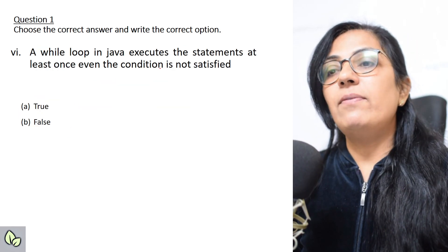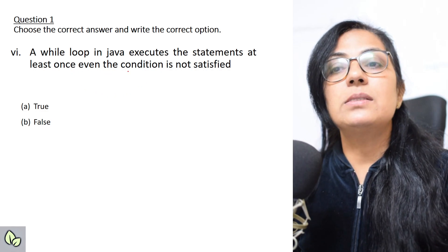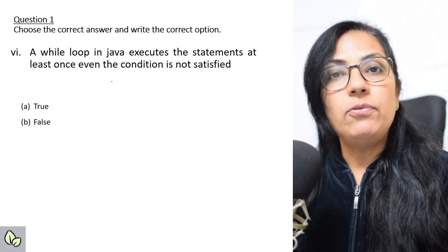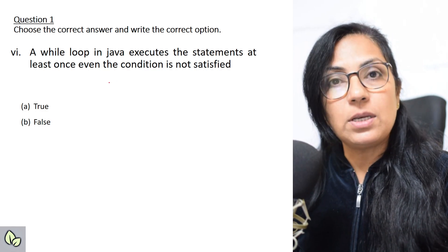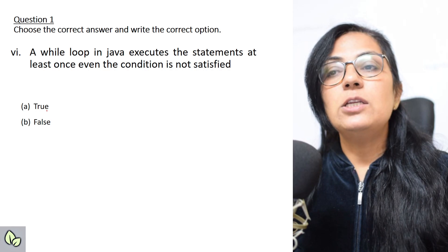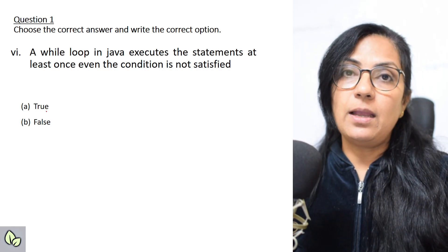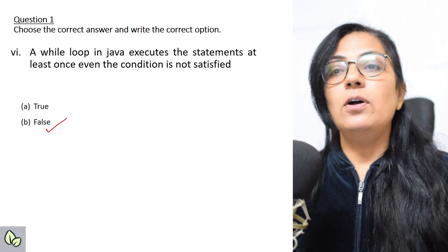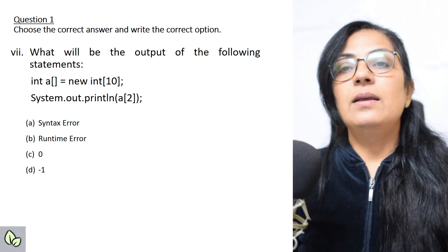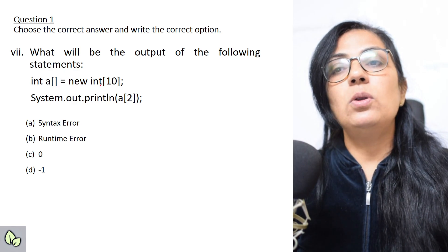A while loop in Java executes the statement at least once even if the condition is not satisfied — this is false. While is an entry-controlled loop, so if the condition is not true, it will not enter the loop at all. It will not execute even once.